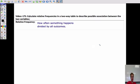This last video is on calculating the relative frequency in a two-way table. So relative frequency is just the percentage. It's how often something happens divided by the outcome.